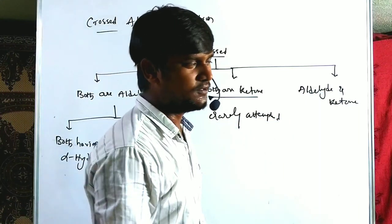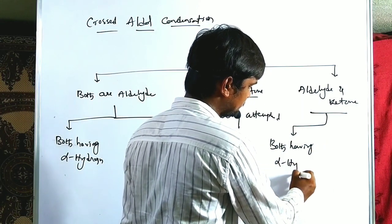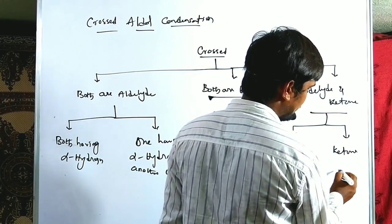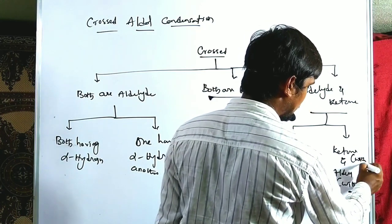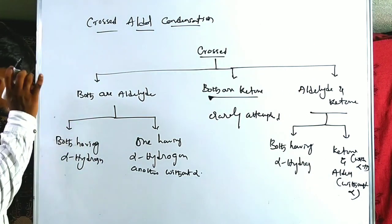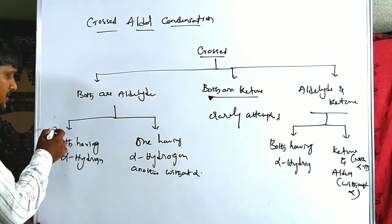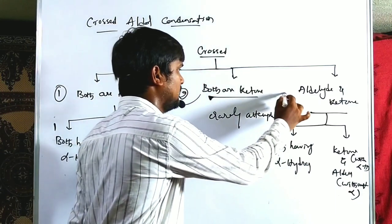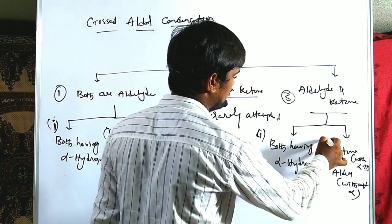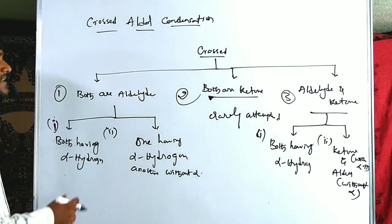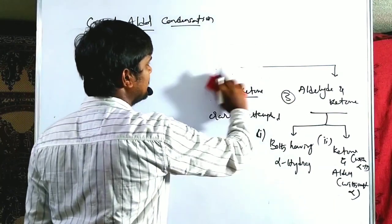Now in case of aldehyde and ketones, if both are having alpha hydrogens, or ketone having alpha hydrogen and aldehyde without alpha hydrogen — these subcases arise. From this diagram, five types of cross-aldol reactions are observed. The first case is both aldehydes having alpha-hydrogen. Let us take the first example, which is CH3CH2CHO — an aldehyde.